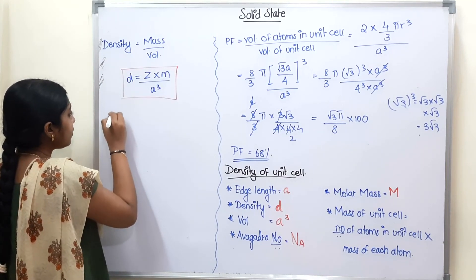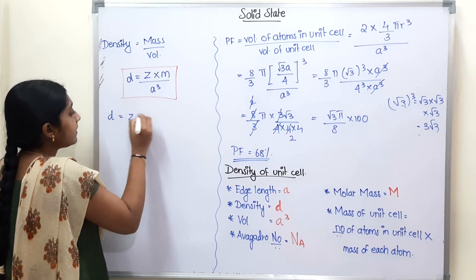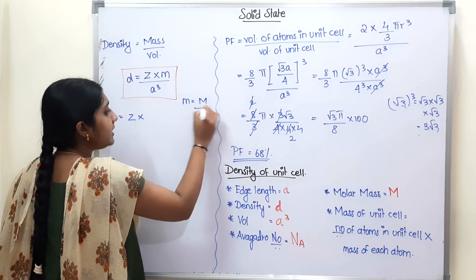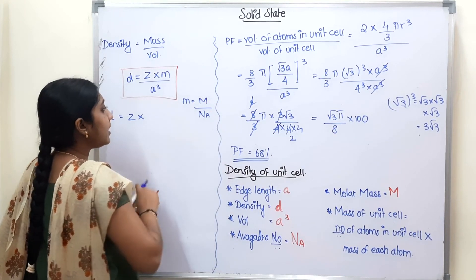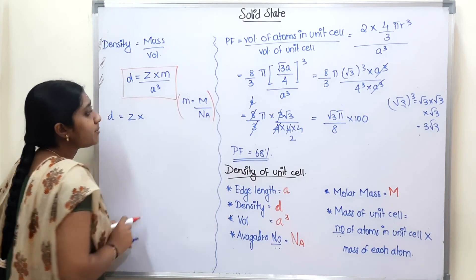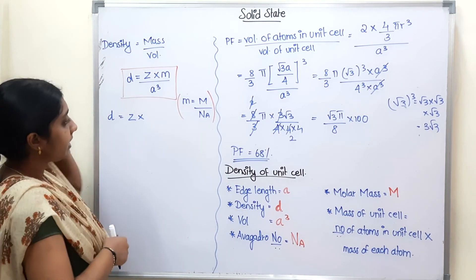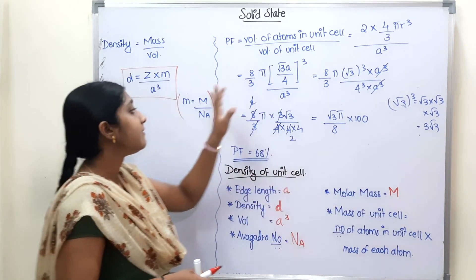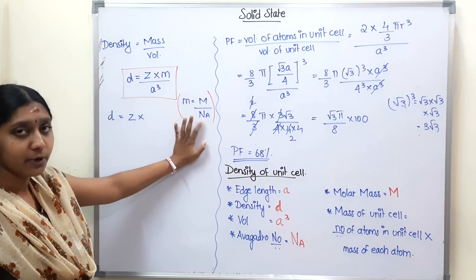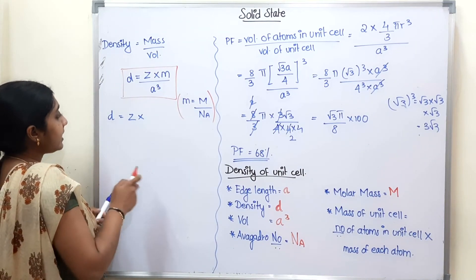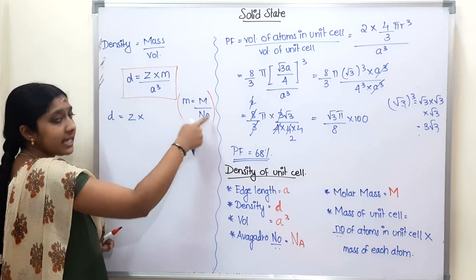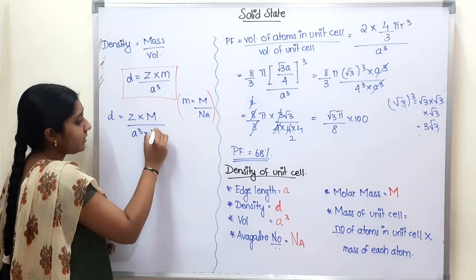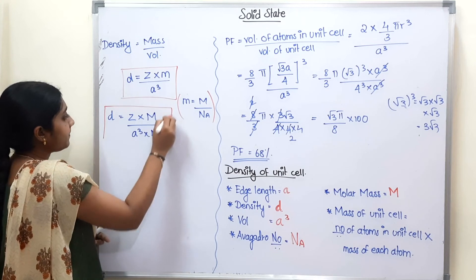Now, small m — mass of each atom — is equal to capital M (molar mass) divided by Avogadro's number N_A. We already know this formula. So density D equals n times M divided by A cubed times N_A. This is the final density formula for a unit cell.